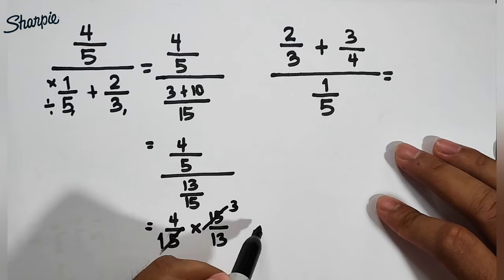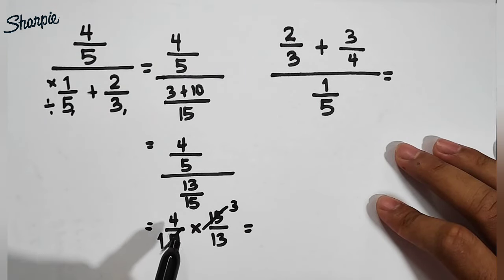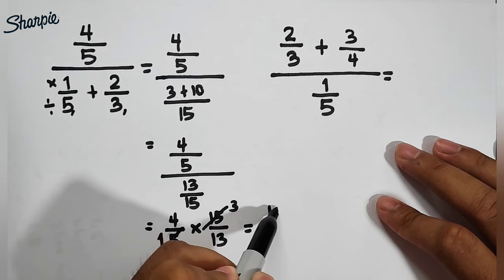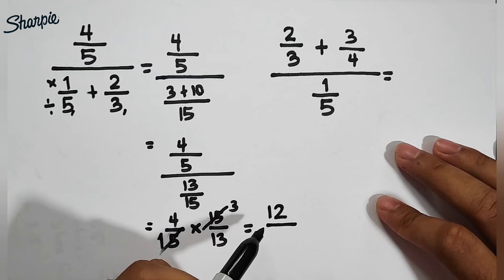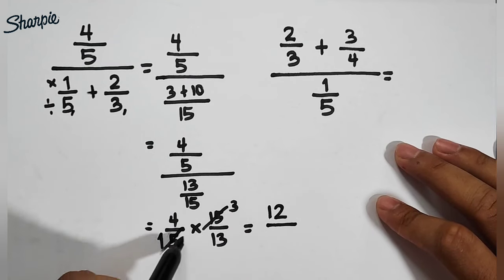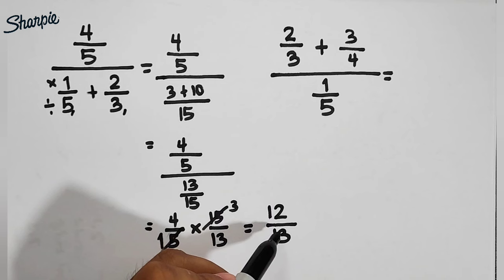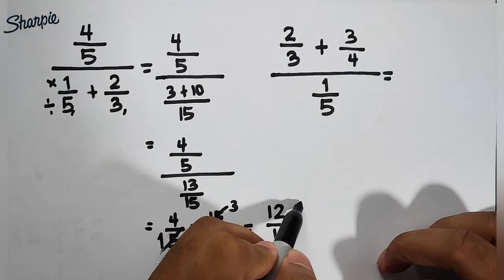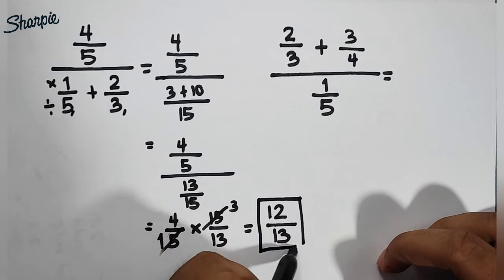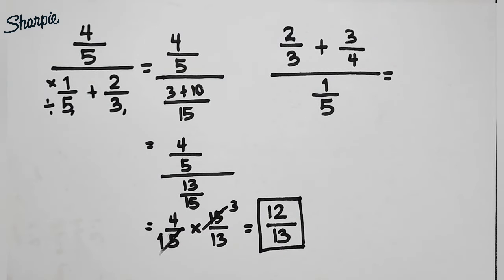So as you can see, the numerators, or the remaining numbers in your numerator, is 4 times 3, which is equal to 12, over 1 times 13, which is 13. And in this case, guys, it is already simplified. So this is the final answer for item number 2.